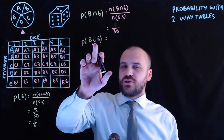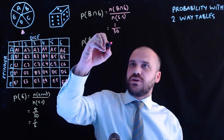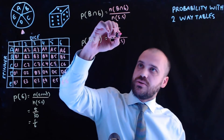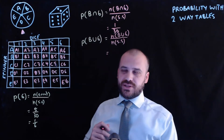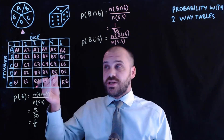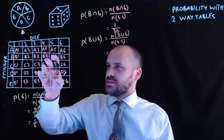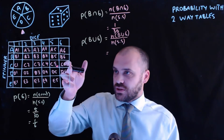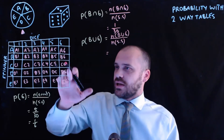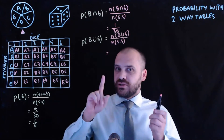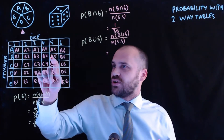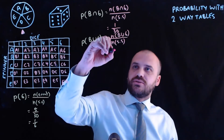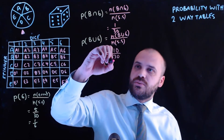What about a B or a six — the union? We use the same formula: number of favourable outcomes over the sample space of 30. How many ways can we get a B or a six? There are six B's and five sixes, but there's one overlap — B and six counted in both. Counting them all: one, two, three, four, five, six, seven, eight, nine, ten. There are ten outcomes that are B or six. So that's ten out of 30, which is one in three — a one in three chance of getting a B or a six.